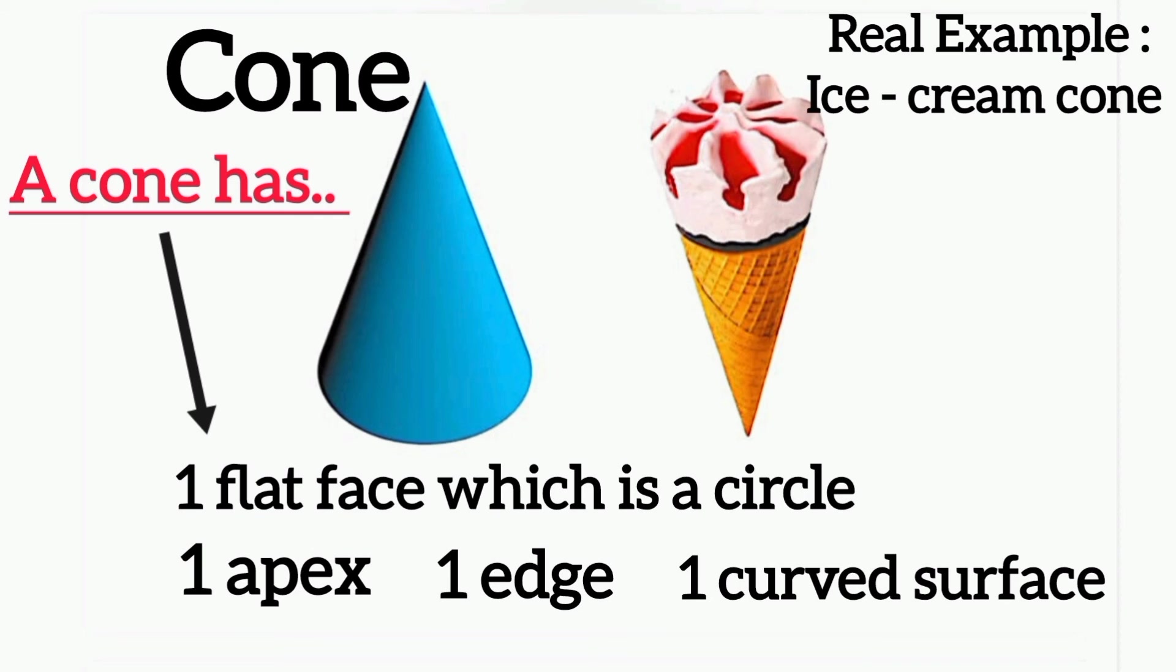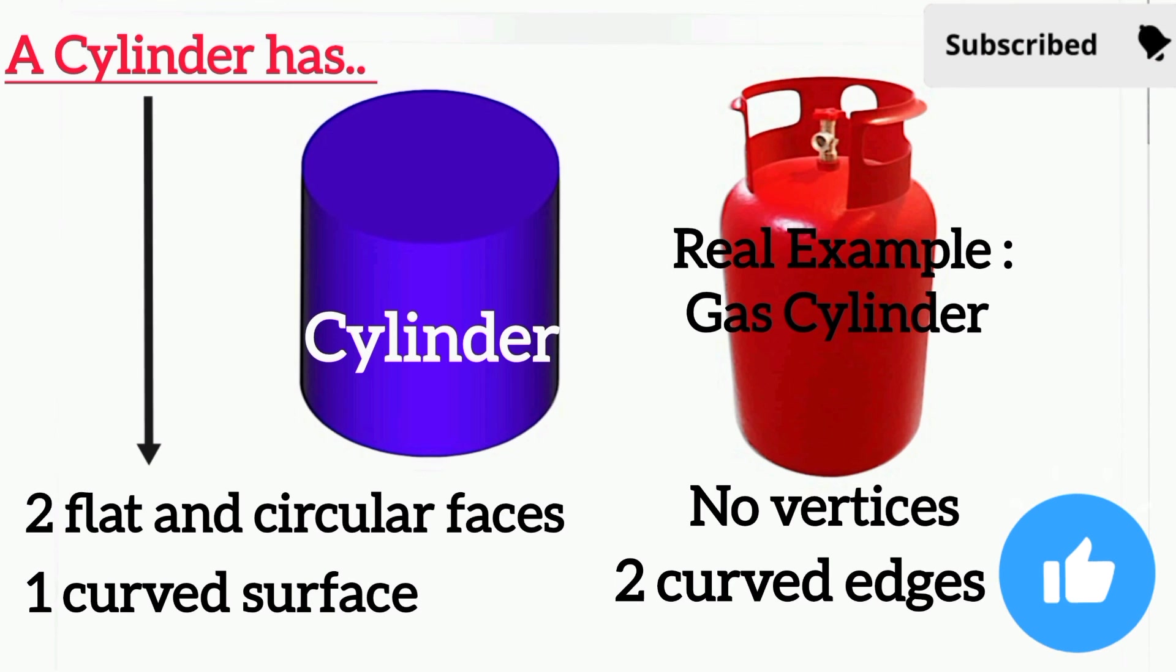Cylinder: a cylinder has two flat and circular faces. It has one curved surface, no vertices, and two curved edges. A real example of a cylinder is the gas cylinder.